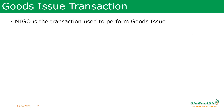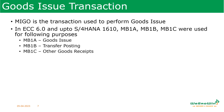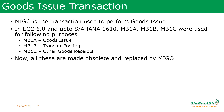MIGO is the transaction used to perform goods issue. In ECC 6 and up to S/4 HANA 1610, the transactions MB1A (used for goods issue), MB1B (used for transfer posting), and MB1C (used for other goods receipts) were used for various processes. But in the latest versions of SAP S/4 HANA, all these transactions are made obsolete and replaced by MIGO. Similar to how business partner replaced the old vendor master creation transactions, SAP has moved to MIGO as the common transaction for all goods movements.